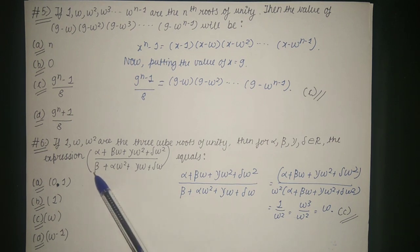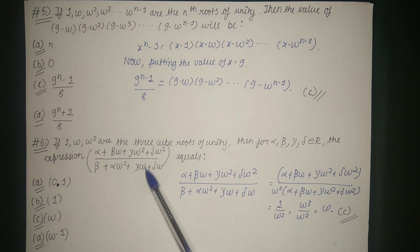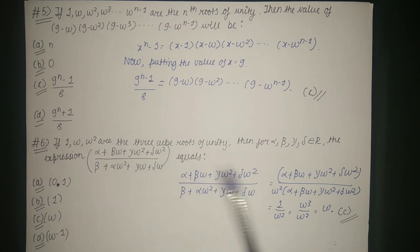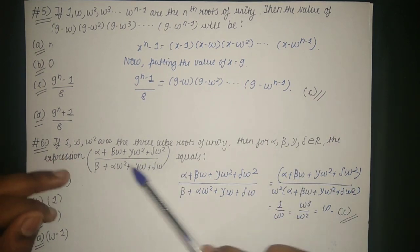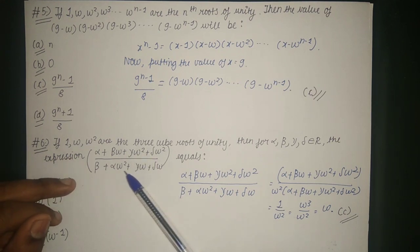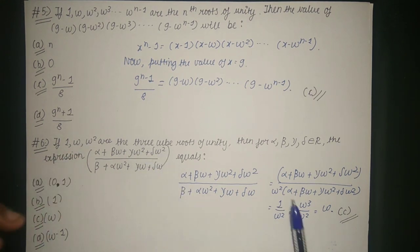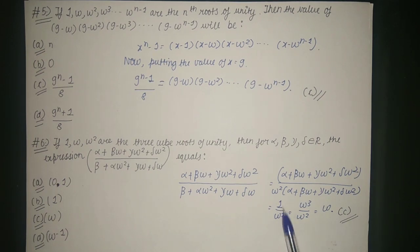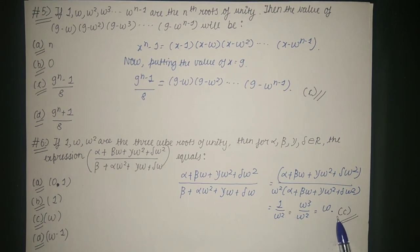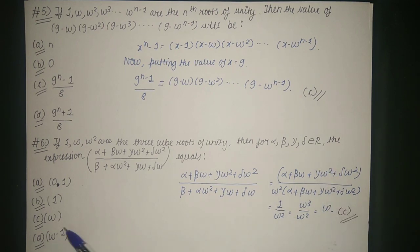We write β as β·ω³ and rewrite γω and σω as γ·ω⁴ and σ·ω⁴ using ω³ = 1. After simplifying and dividing numerator by denominator, the only remaining term in the denominator is ω². Writing 1 as ω³ gives 1/ω² = ω, so the final answer is ω — option C.